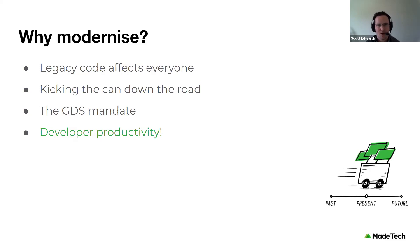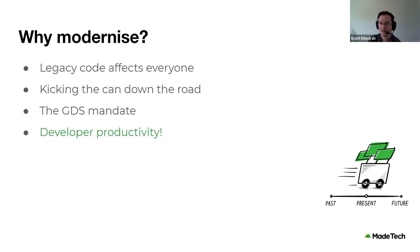It can be tempting to keep kicking the can down the road — ignoring the drawbacks of legacy code and carrying on tweaking it and building on top of it. While this may work in the short term, in the long term you will be slowing down and frustrating your development teams, lowering your feature delivery cadence. To use a common metaphor, you are putting yourself at risk of collapse when you attempt to add layers to a skyscraper built on shaky foundations.